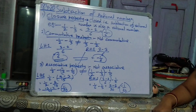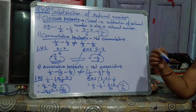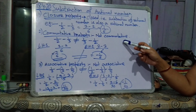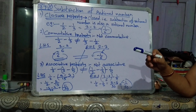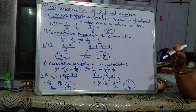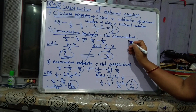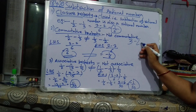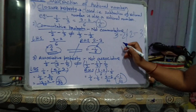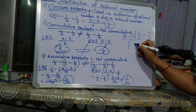Next is commutative property. Commutative property means, like we have done in addition: 3 plus 2 equals 2 plus 3. If we take subtraction in that way, it is not commutative. Because 3 minus 2 is not equal to 2 minus 3. LHS is 1 and RHS is minus 1, so this is not equal.